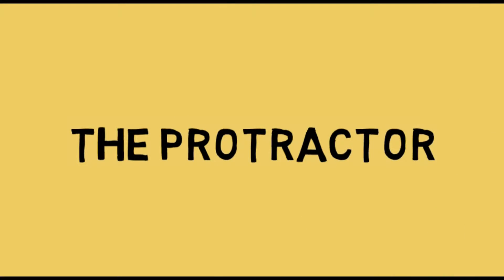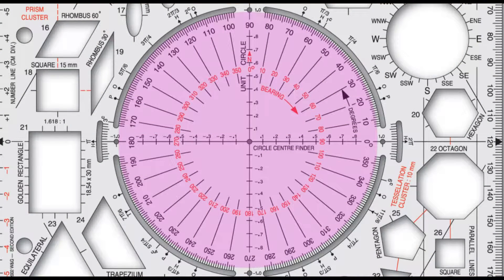The protractor. At the heart of the template is a very useful 360 degree protractor. A learner can easily draw the Cartesian plane by plotting five points across the x and y axis.